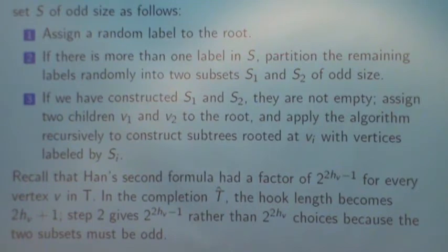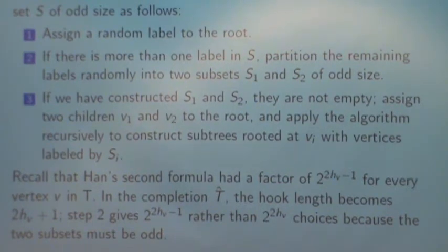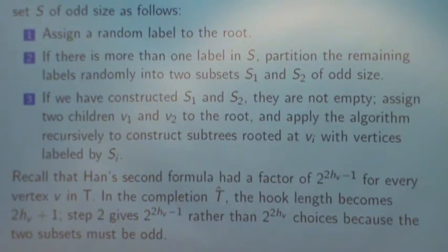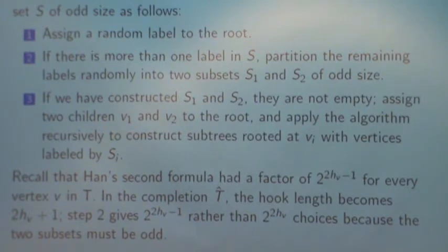If we've constructed S1 and S2, they can't be empty because they're of odd size. So that means we can assign two children to the root, V1 and V2. And if the sets have more than one element, apply the algorithm recursively to construct subtrees rooted at those vertices with the vertices labeled by the Si.